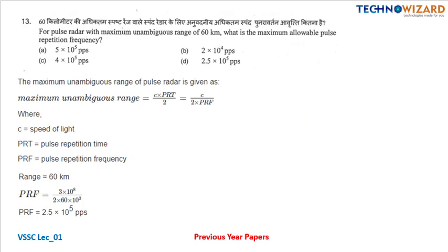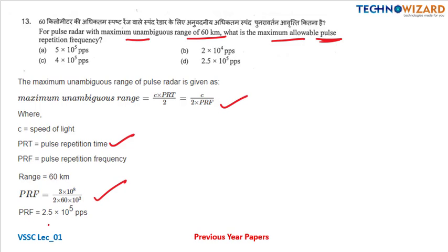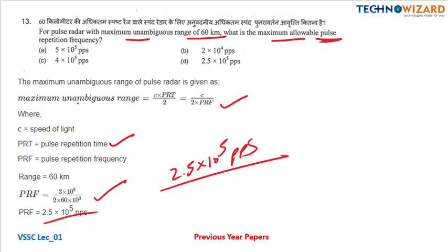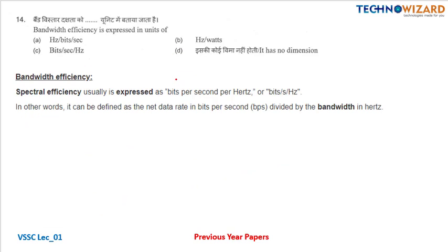Question number thirteen: for a pulse radar with maximum unambiguous range of 60 kilometers, find the maximum allowable pulse repetition frequency. Maximum unambiguous range equals C times PRT upon 2. Since PRT equals 1 by PRF, PRF equals 3 into 10 to the power 8 upon 2 into 60 kilometers. PRF equals 2.5 into 10 to the power 5 pulses per second. Option D is the correct answer.